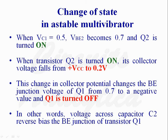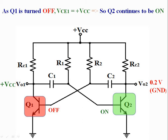Change of state in an astable multivibrator: When VC1 is equal to 0.5V, VBE2 becomes 0.7V and transistor Q2 is turned on. When transistor Q2 is turned on, its collector voltage falls from plus VCC to 0.2V. This change in collector potential changes the base-emitter junction voltage of transistor Q1 from 0.7V to a negative value, turning Q1 off. The voltage across capacitor C2 reverse biases the base-emitter junction of transistor Q1. As Q1 is turned off, VCE1 is equal to plus VCC, so Q2 continues to be in the on condition.